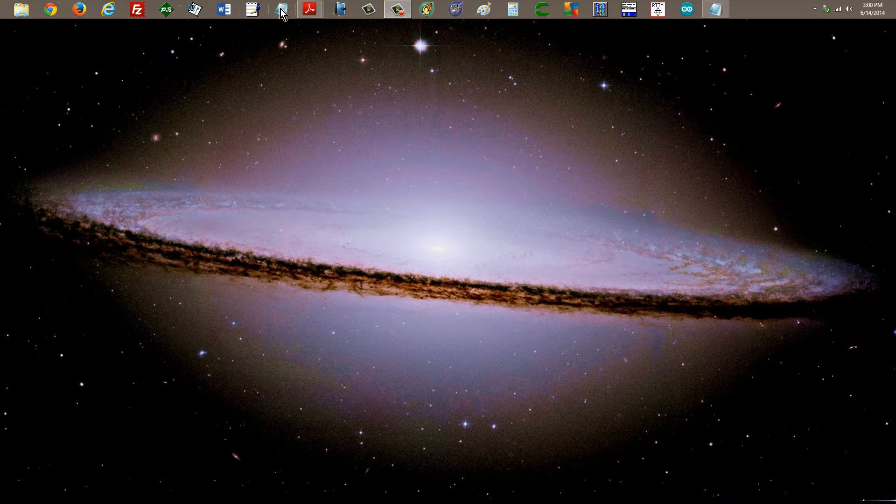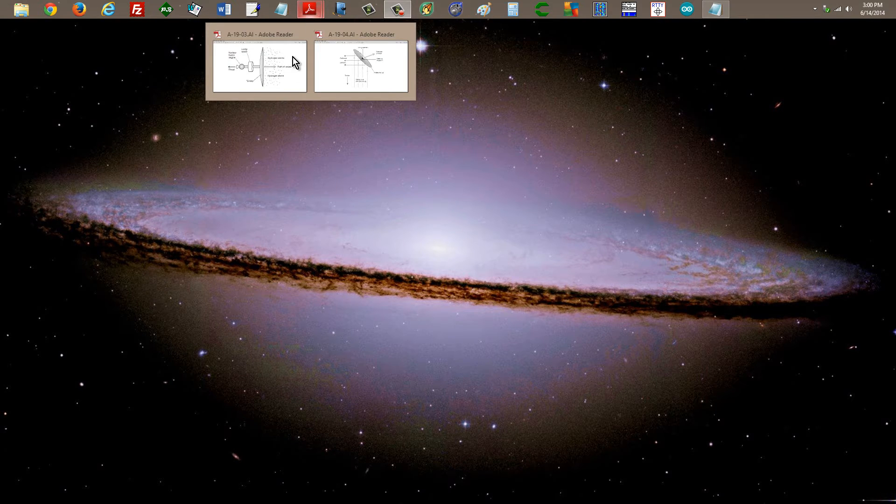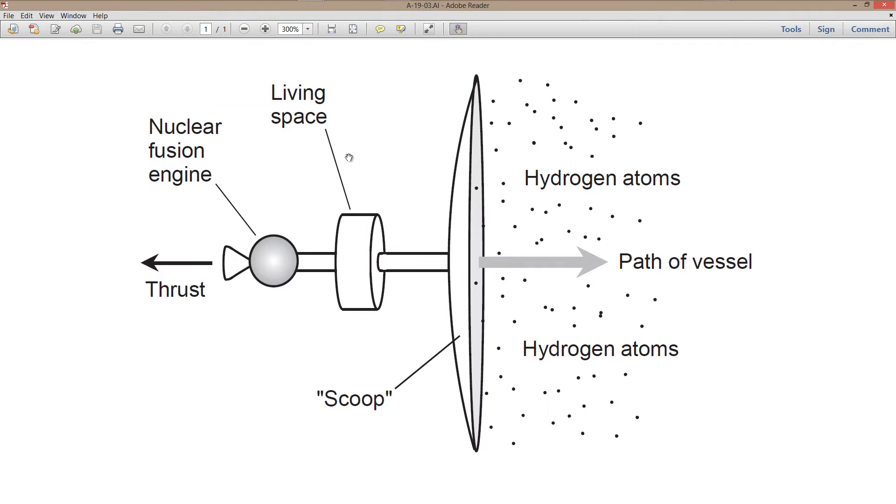Basically, it is a hydrogen-powered spacecraft that uses nuclear fusion, as shown here in this diagram, to obtain its thrust—a continuous fusion reaction, something like a continuous low-grade atom bomb, or hydrogen bomb. It has a living space, and then it has a gigantic scoop which sweeps up hydrogen atoms that seem to be everywhere in our universe.